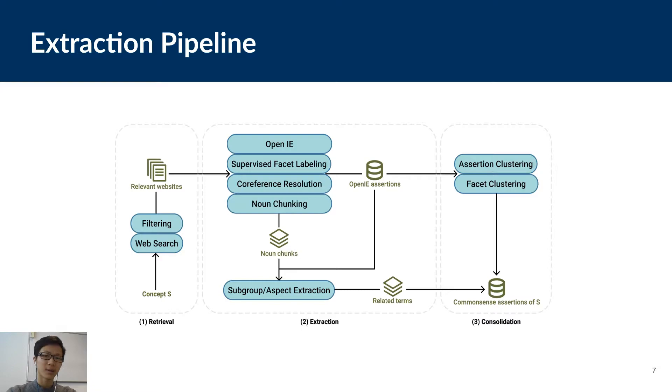In the retrieval phase, we search through the web documents specific to the target subject and automatically filter out out-of-context documents. Then in the extraction phase, we extract from retained text, common sense assertions, and related terms. Finally, in the consolidation phase, we cluster assertions and facets into groups of semantically similar statements. And in the next slide, I'll describe to you every phase in more detail.